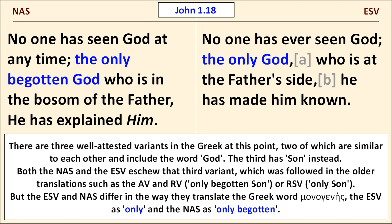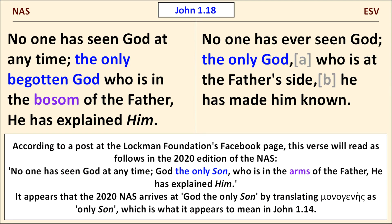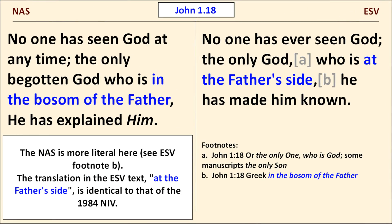Bauer gives unique or only as the primary meaning of monogenes, but he also notes that some experts lean toward only begotten. According to a post at the Lockman Foundation's Facebook page, this verse will read in the 2020 edition of the NAS: No one has seen God at any time; God the only son, who is in the arms of the father, he has explained him. It appears that the 2020 NAS arrives at God the only son by translating monogenes as only son, which is what it appears to mean in John 1:14. The NRSV also reads God the only son. Both the NAS and the ESV's parent the RSV have in the bosom of the father at the end of the verse. Sadly, the ESV replaced this literal rendering with at the father's side — changes like this may be why I've never been able to love the ESV.